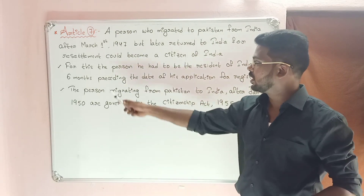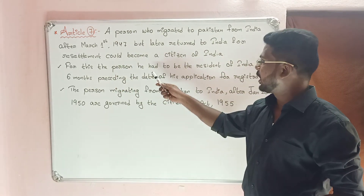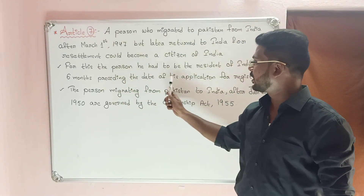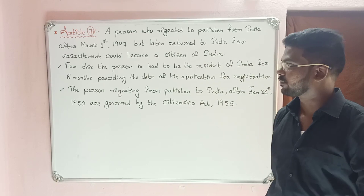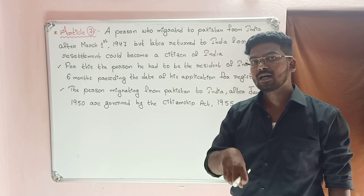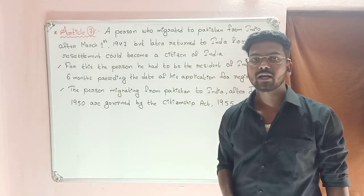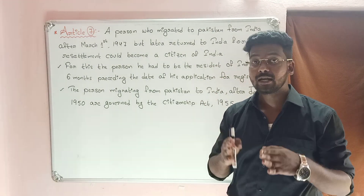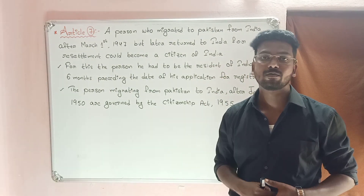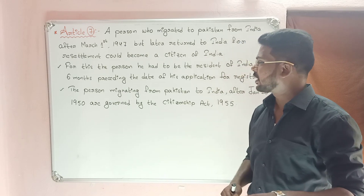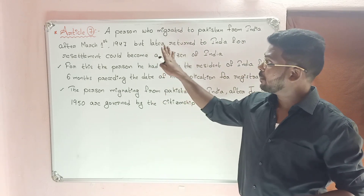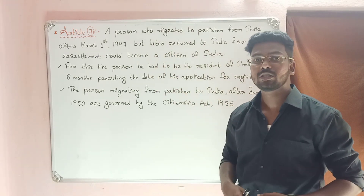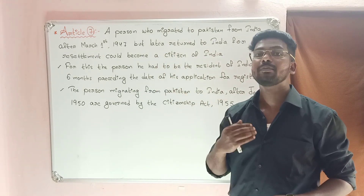Under Article 7, the person must have been a resident of India for six months before the date of their application for registration. They apply for Indian residence. The important point is that Article 7 deals with migration before the commencement of the Constitution.